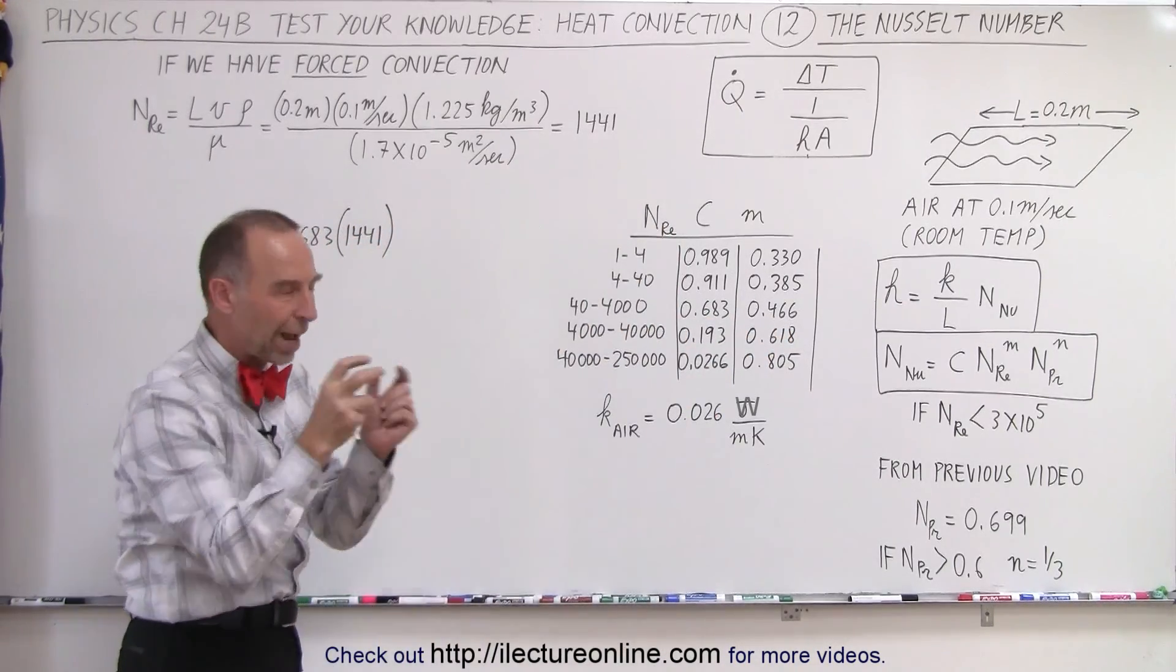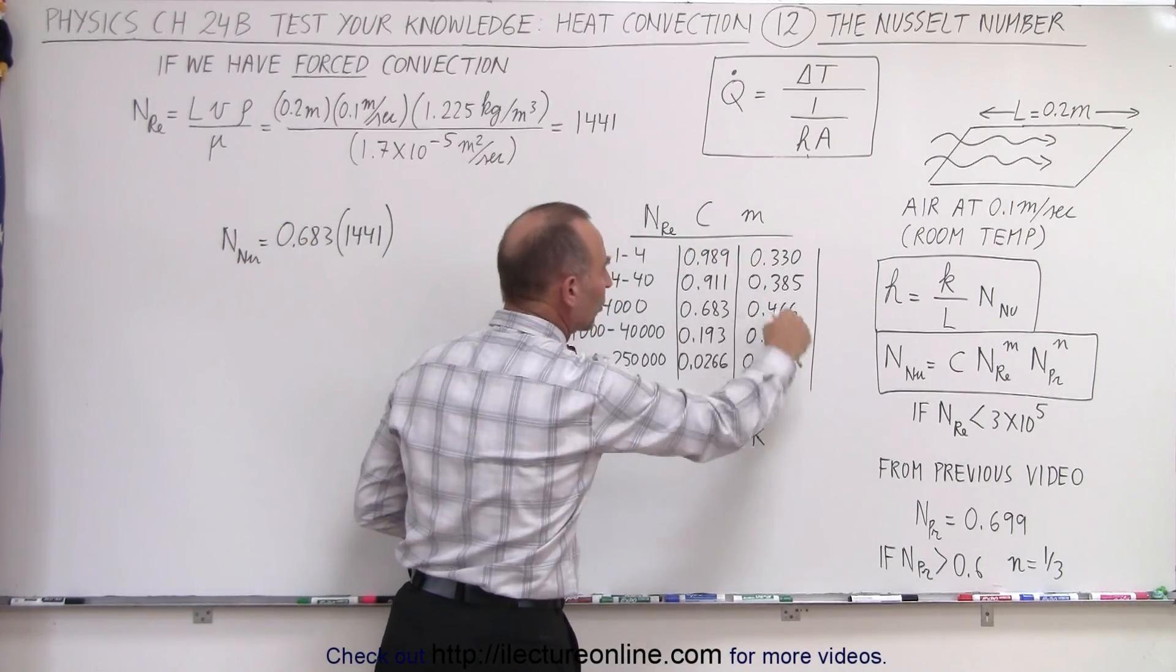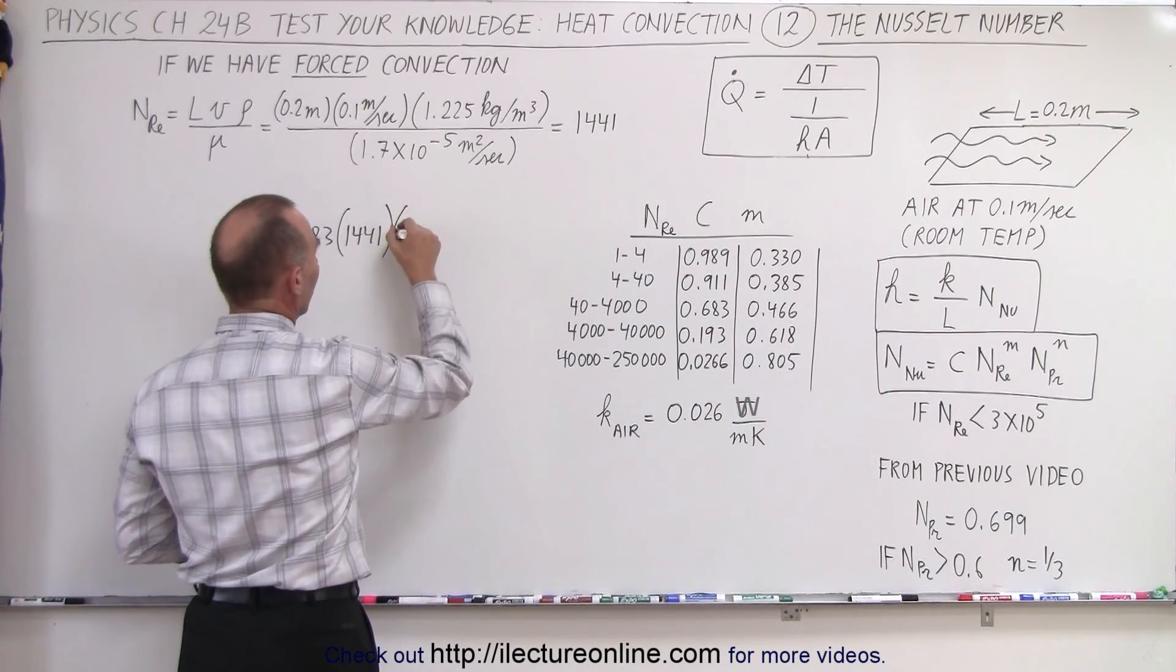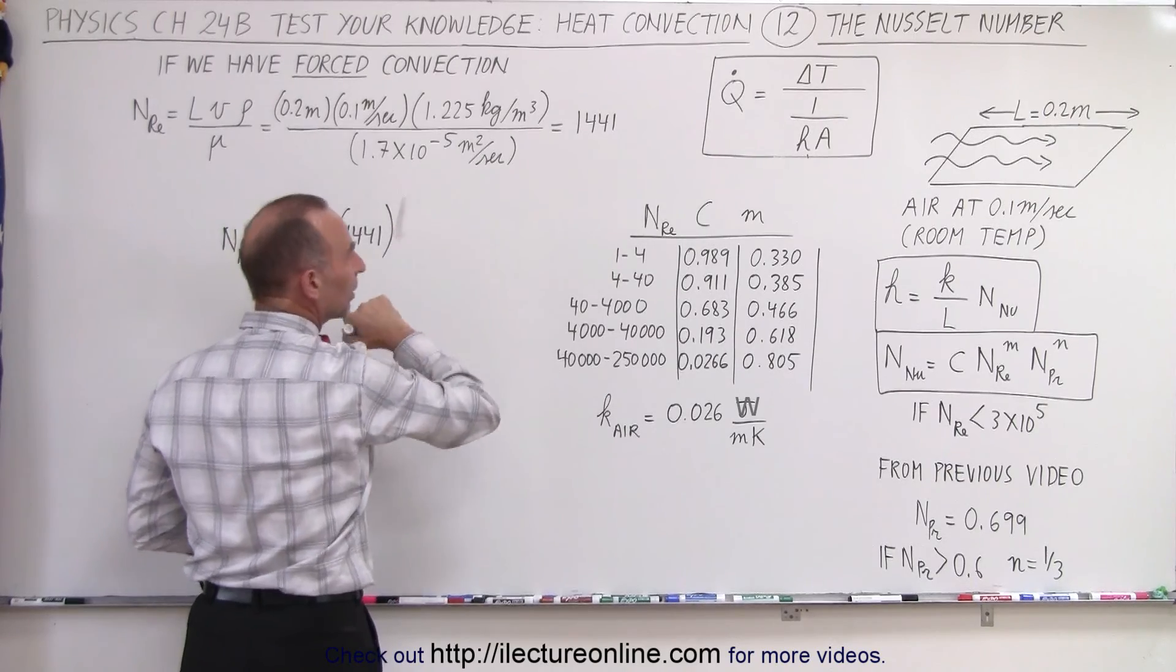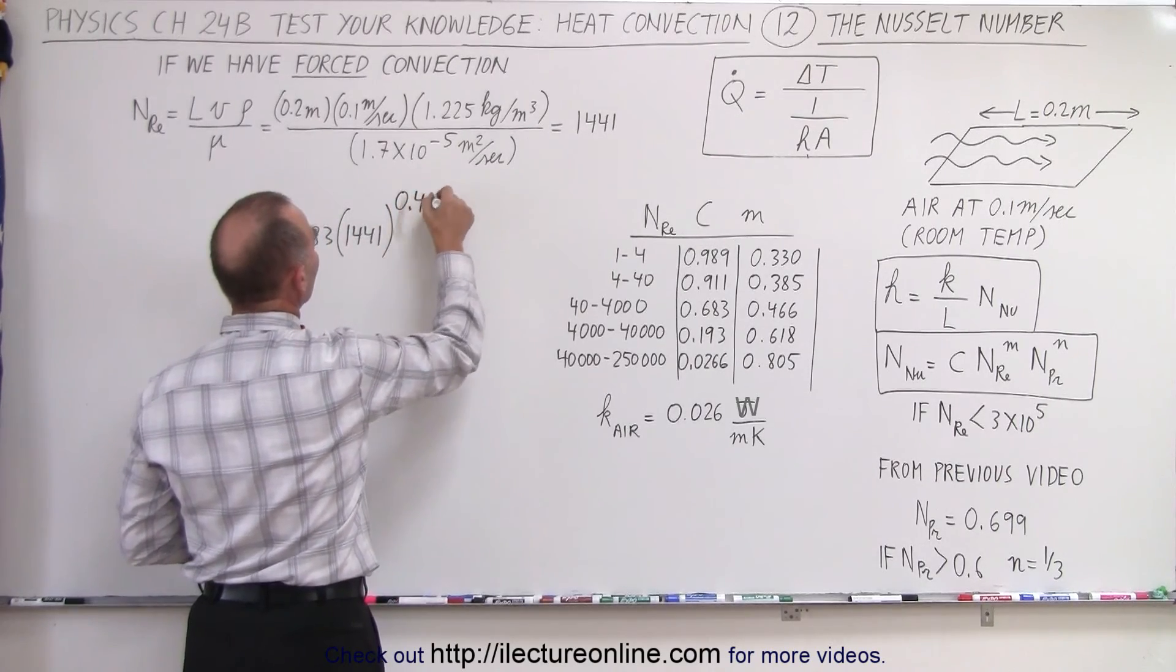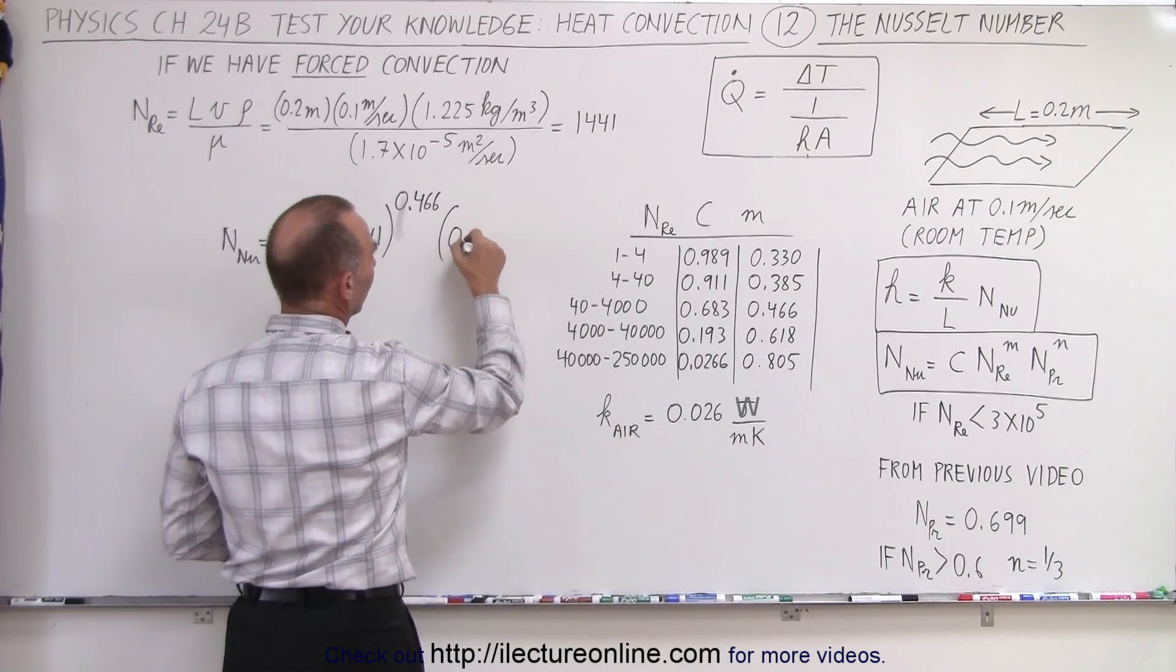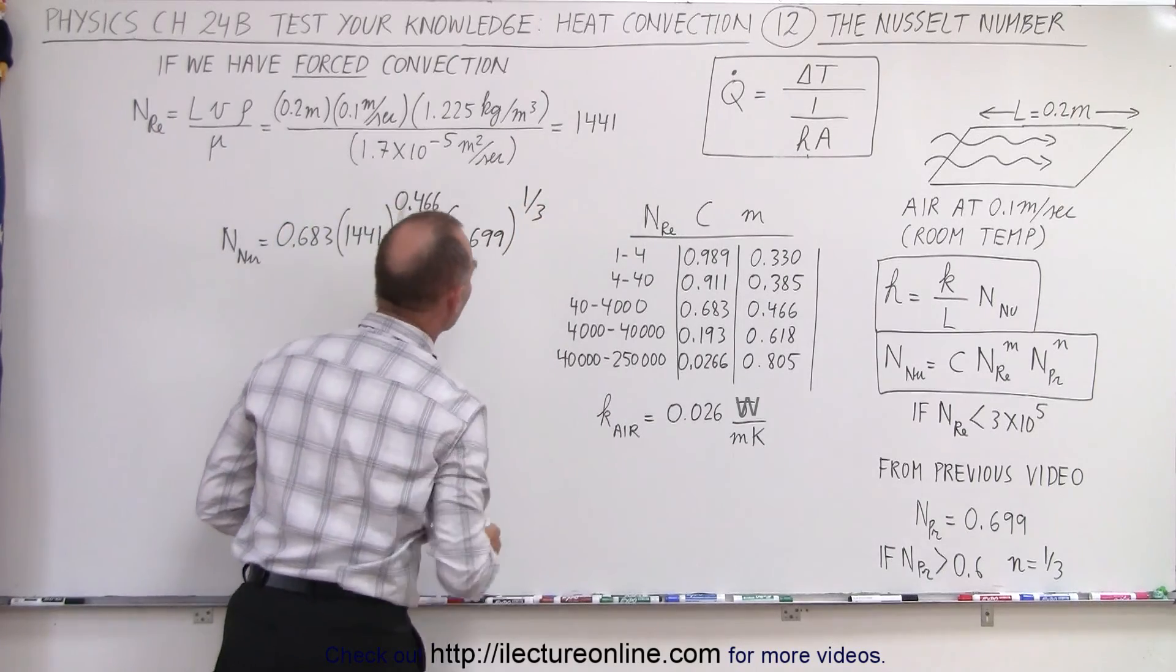Of course, we're just now grabbing that number. We know that there's going to be a changing range of that number, but let's just go ahead and grab that. That's probably a pretty good representative number, and that's going to be the exponent. Exponent 0.466. Then the Prandtl number, that is equal to 0.699 raised to the one-third power.